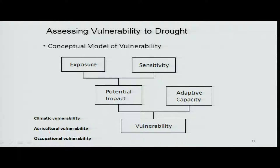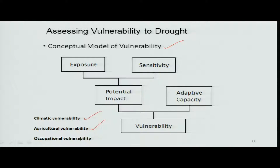When you talk about assessing the vulnerability to drought, there are conceptual models which tell you how to do that. It could be a climate-based vulnerability or an agriculture-based vulnerability. Climate-based vulnerability refers to rainfall, temperature, and things like that, whereas agriculture vulnerability is the vulnerability due to the non-availability of water — plant growth is stunted. That is what we call agriculture vulnerability.